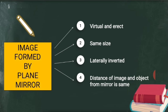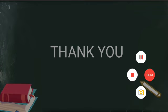The fourth characteristic is that the distance of the image from the mirror equals the distance of the object from the mirror. If you are standing two feet in front of the mirror, your image will be formed two feet behind the mirror. These are the important characteristics of the image formed by a plane mirror. Hope you have enjoyed today's lesson — see you in the next class, thank you.